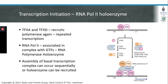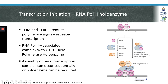Assembly of the basal transcription complex can occur in two different ways. First, it can occur sequentially, where TF2B binds to TF2A and TF2D, followed by TF2F and RNA polymerase 2, which is then followed by TF2E and TF2H. Alternatively, RNA polymerase 2 can associate with other members of the basal transcription complex as an RNA polymerase holoenzyme, which is directed to TF2D and TF2A at the TATA box in one step rather than sequentially. In both manners, transcription can be initiated.